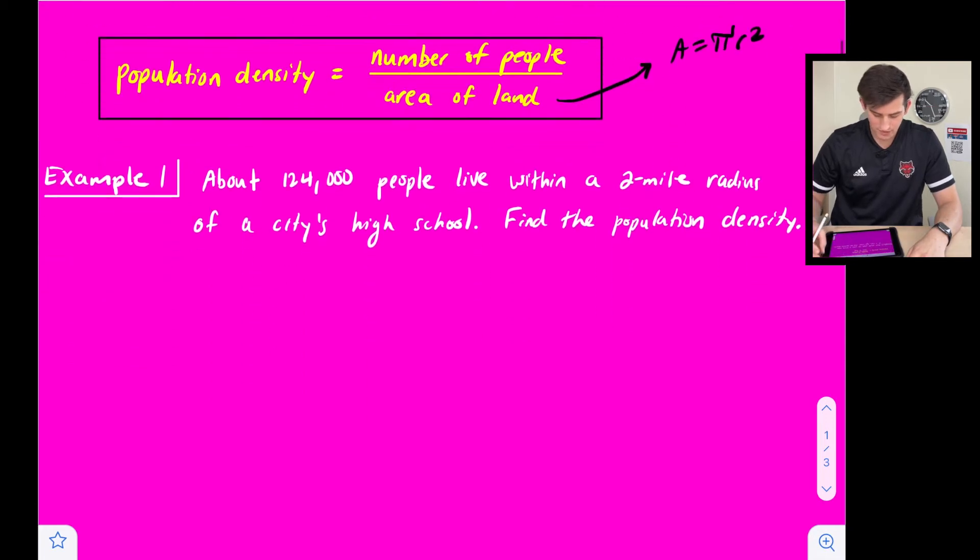All right, let's look at our first example here. About 124,000 people live within a two mile radius of a city's high school. Find the population density.